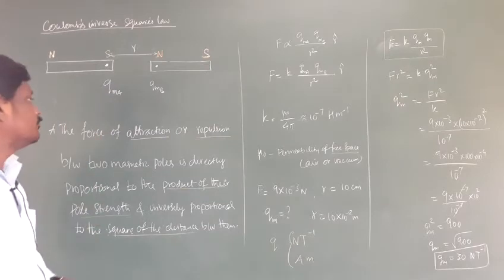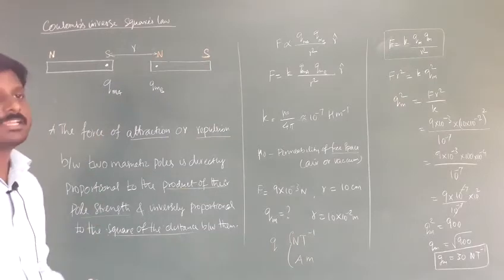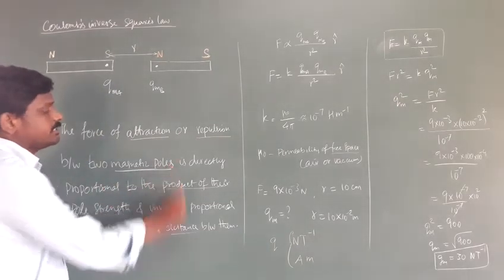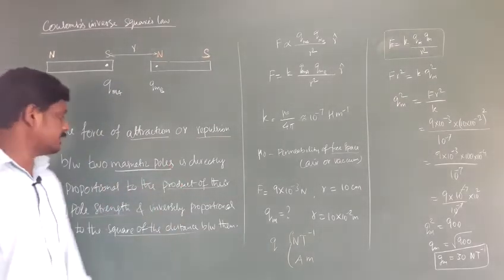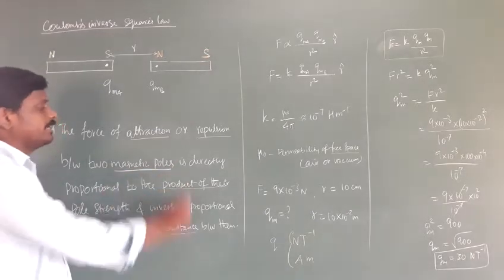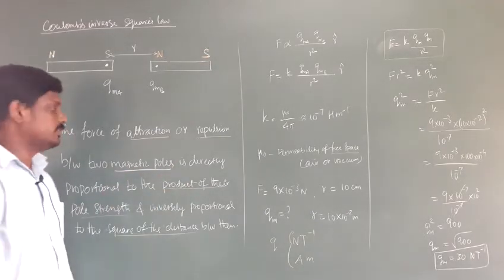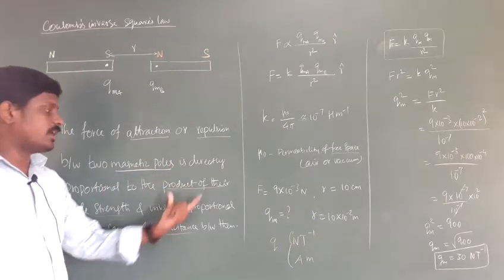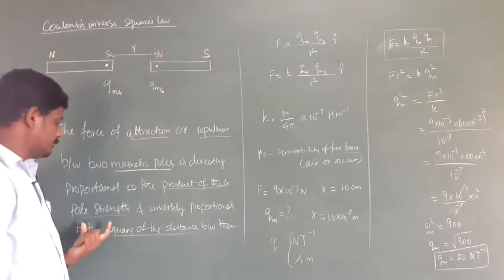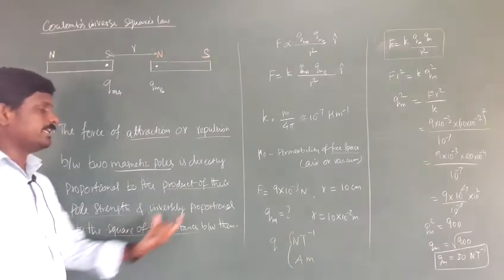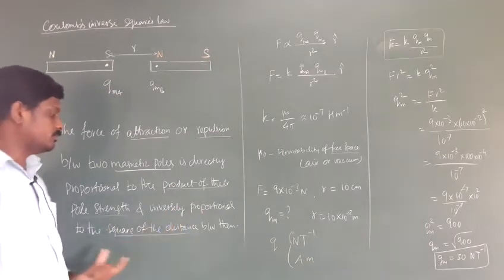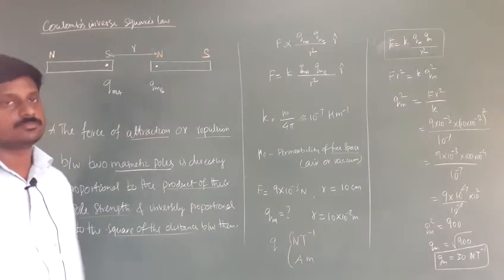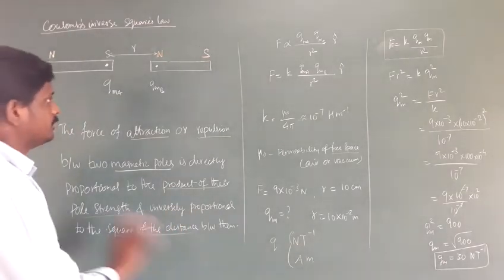The force of attraction or repulsion between two magnetic poles is directly proportional to the product of their pole strengths and inversely proportional to the square of the distance between them. It is somewhat similar to electrostatics.